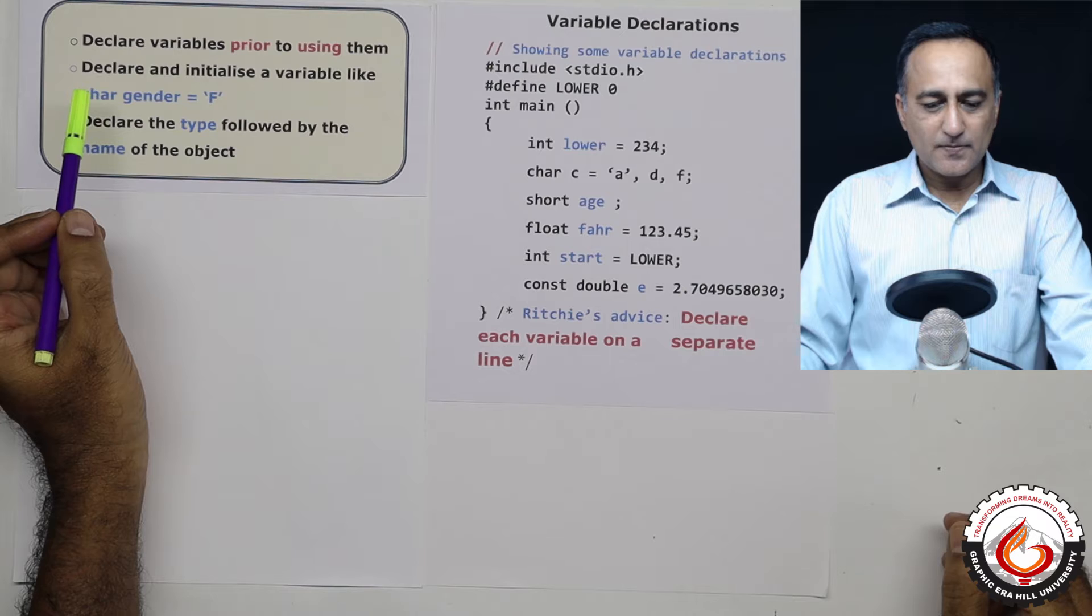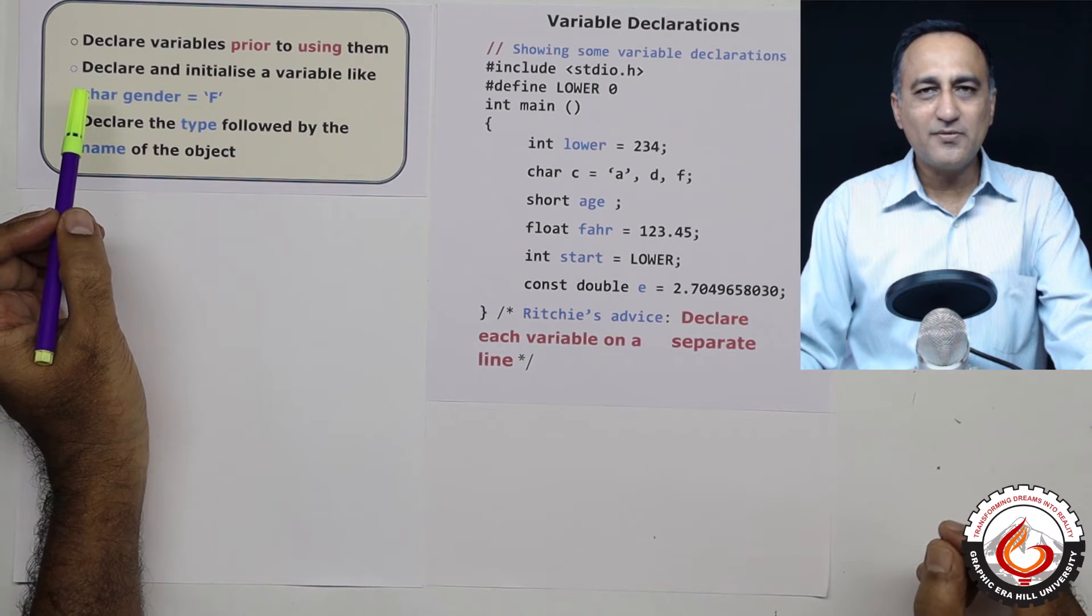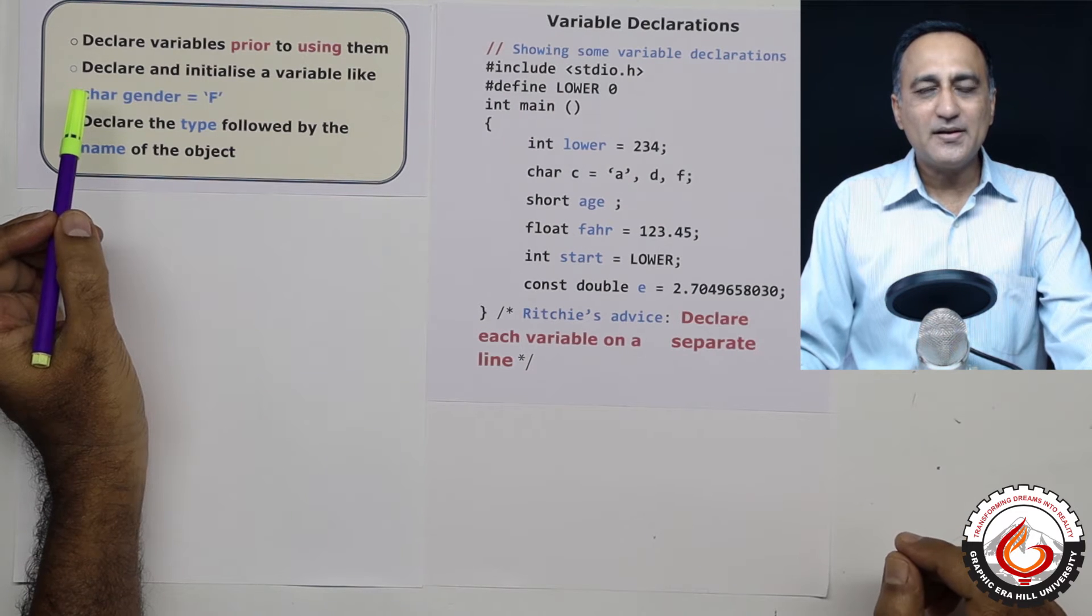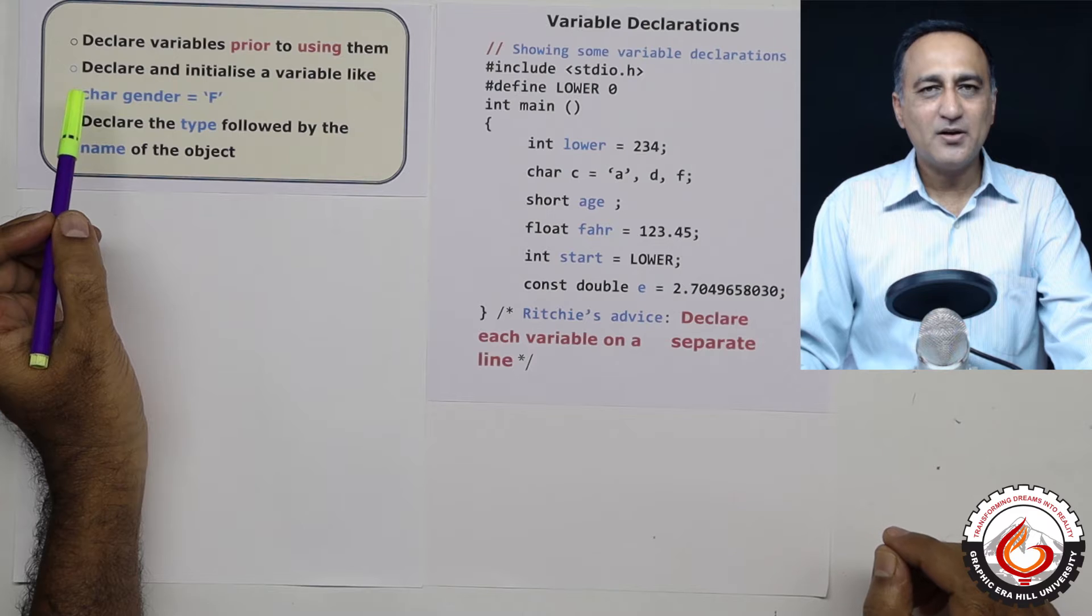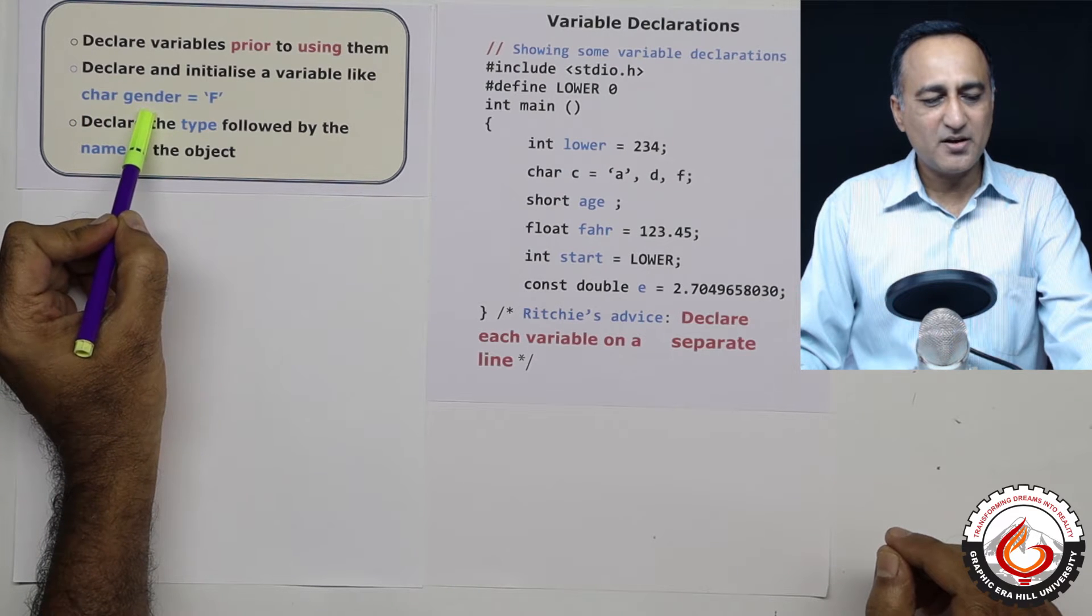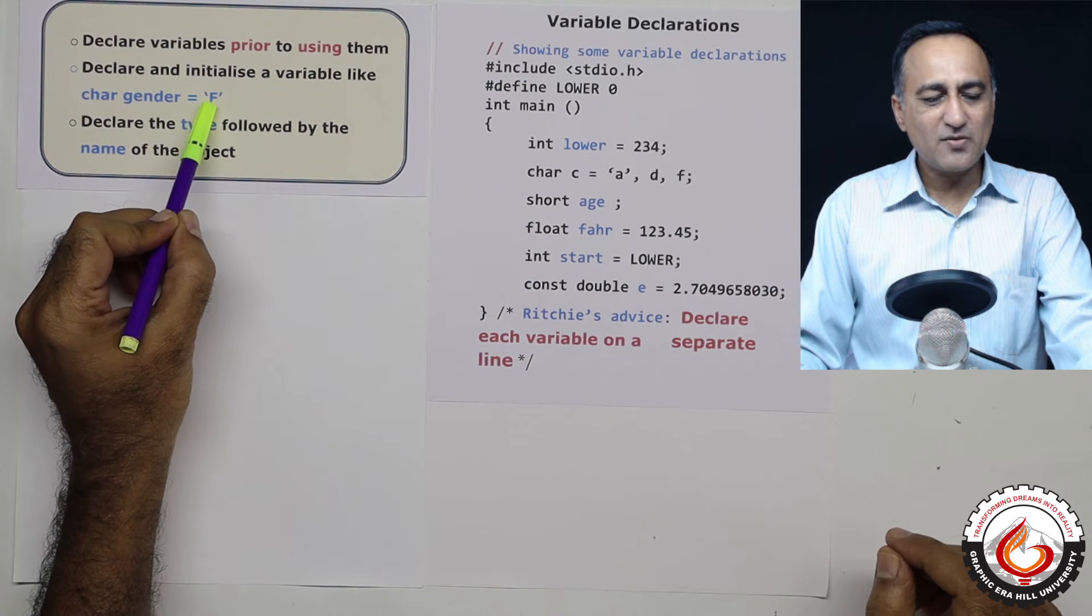Now suppose you have to declare a variable, it is also possible to give that variable an initial value. Suppose you're going to read the gender of a person, whether it's male or female. So here it shows I have declared a variable called gender, it's of the type character or char and I have given it the initial value f.